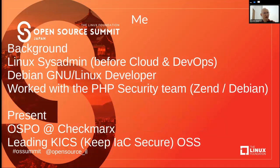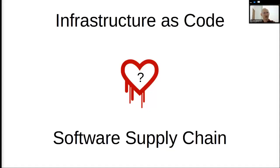I'll start with a short background about myself. I started as a Linux sysadmin before there was cloud, or the title was referred to as DevOps. I'm a Debian GNU Linux developer, and I work with the PHP security team as part of working for Zend, the PHP company, and as part of my work in Debian. Today, I'm managing the Open Source Program Office at Checkmarks, and I'm leading the KIX Open Source Project, which stands for Keep Infrastructure as Code Secure. Today, we'll talk about infrastructure as code and its relation with software supply chain, and how we can learn from software supply chain regarding infrastructure as code.